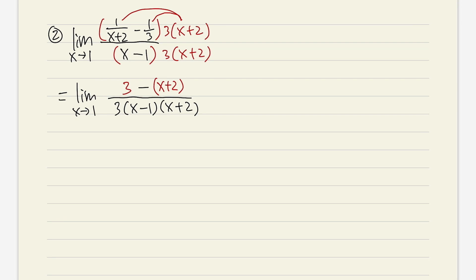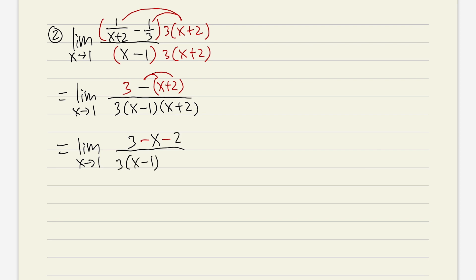Let's distribute the top. We get the limit as x approaching 1. Distributing gives us 3 minus x minus 2. Be really careful with the minus signs. The bottom stays as 3 times (x minus 1)(x plus 2). On the top, combining 3 minus 2 gives plus 1, so we have negative x plus 1 on top, and the bottom stays the same.